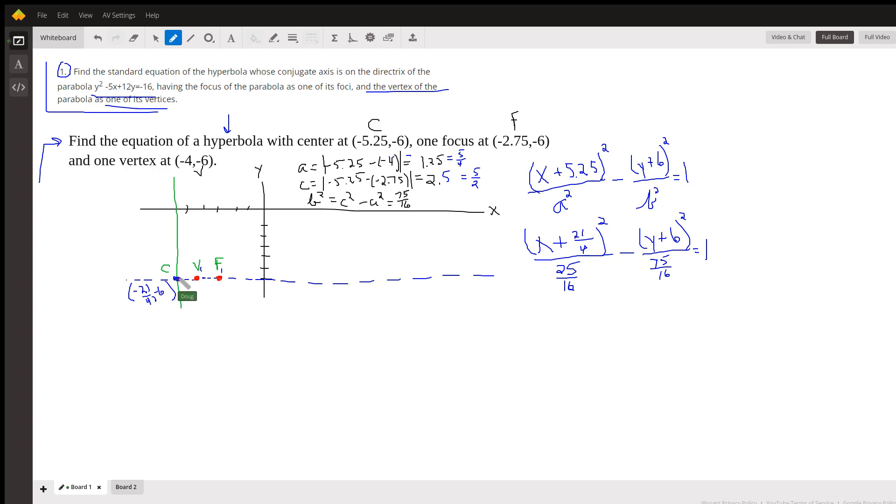Next, we know that this distance right here was 5 fourths, and that distance right there from the center of hyperbola to one of the vertices, we use the letter A for that. So that distance is 5 fourths, and the distance from the center to the focus, which happens to be five halves or two and a half, we call C. And for hyperbola, A squared plus B squared equals C squared, so B squared equals C squared minus A squared.